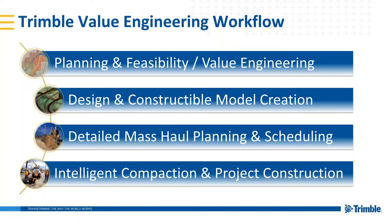For detailed mass haul planning, you can do bulk mass haul balancing within Quantum and then do more detailed analysis within Trimble Business Center. The system is inherently considering costs and trying to balance earthworks — the more material you're moving throughout the alignment, the greater the impact on construction cost. If you want more detailed analysis, drop that alignment into Business Center, do your corridor mass haul, and then proceed to intelligent compaction and project construction as the end goal of that workflow.